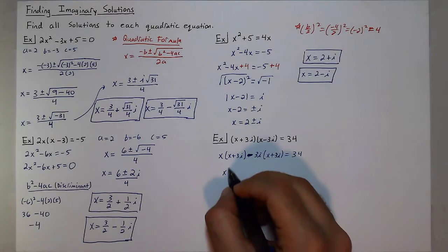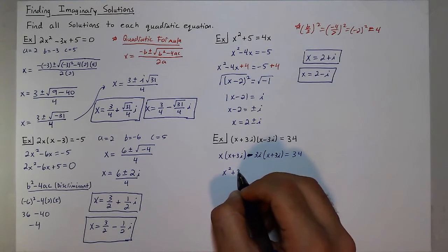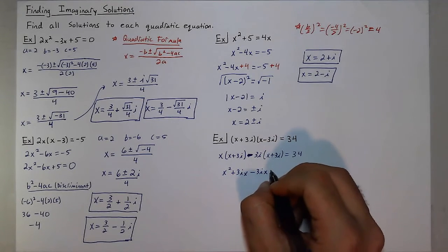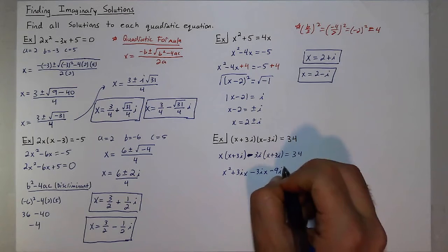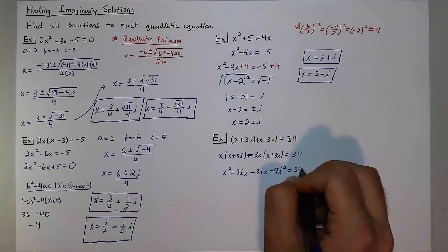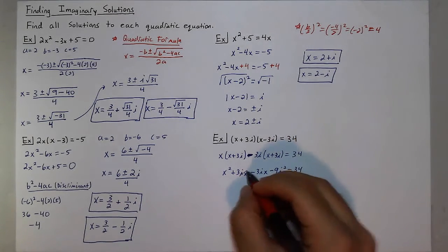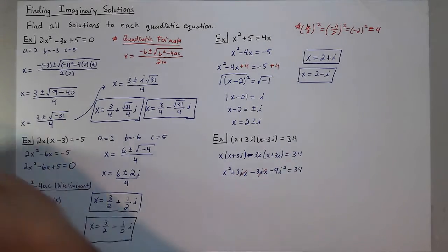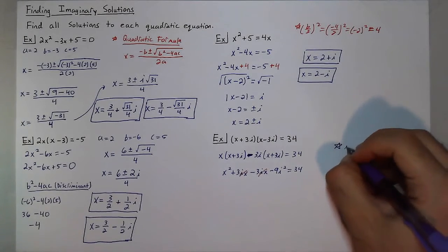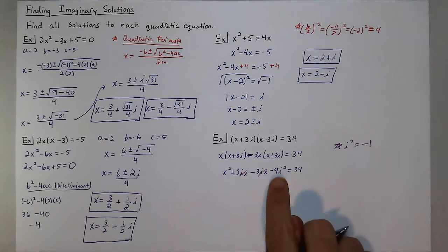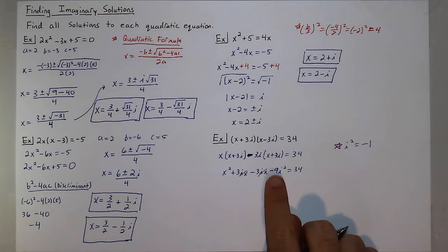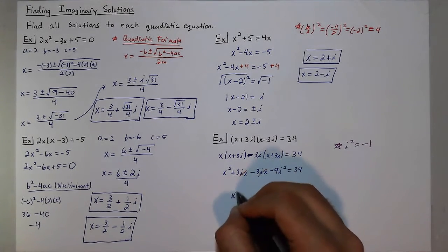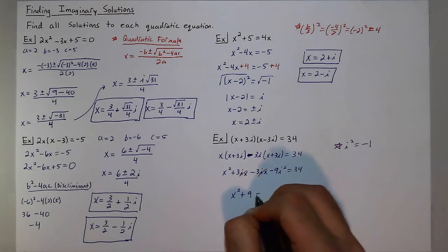And I'll get x² + 3ix - 3ix - 9i². Which, again, I see these middle terms will cancel because they are conjugates. I know that's going to happen. Then i² equals negative 1. So instead of -9i², negative 9 times negative 1 is a positive 9. Leaves me with x² + 9 = 34.